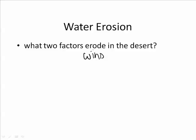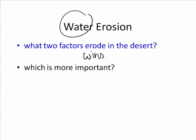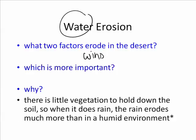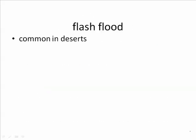Which is more important — water or wind? Water. Although water is rare, it does more erosion because there's very little vegetation in the desert to hold down the soil. So when it does rain, the rain erodes much more than in a humid environment. When rain does occur in the desert, it's common to have flash floods.